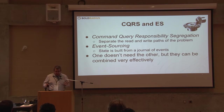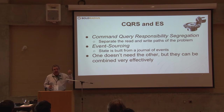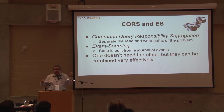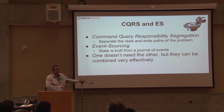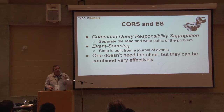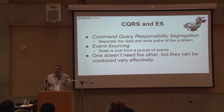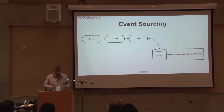There's also a concept called event sourcing, which is quite separate. That is where state — let's say a bank balance — is derived by processing a series of events: things that have happened in the past. You don't save the bank balance of $20; you say I added $10, I added $10, now I have $20. Those two are the events. One does not need the other — CQRS and ES are often seen in combination, but they don't require each other.